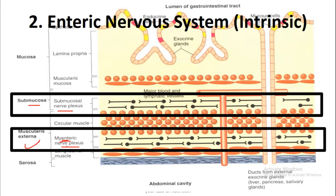The myenteric plexus, within the muscularis externa, is located between the inner circular smooth muscle and the outer longitudinal smooth muscle. These are the circular smooth muscle fibers on the inner side and the longitudinal smooth muscle on the outer side. The myenteric plexus, or Auerbach's plexus, sits between them. The submucosal plexus, or Meissner's plexus, is the network of neurons present inside the submucosa.